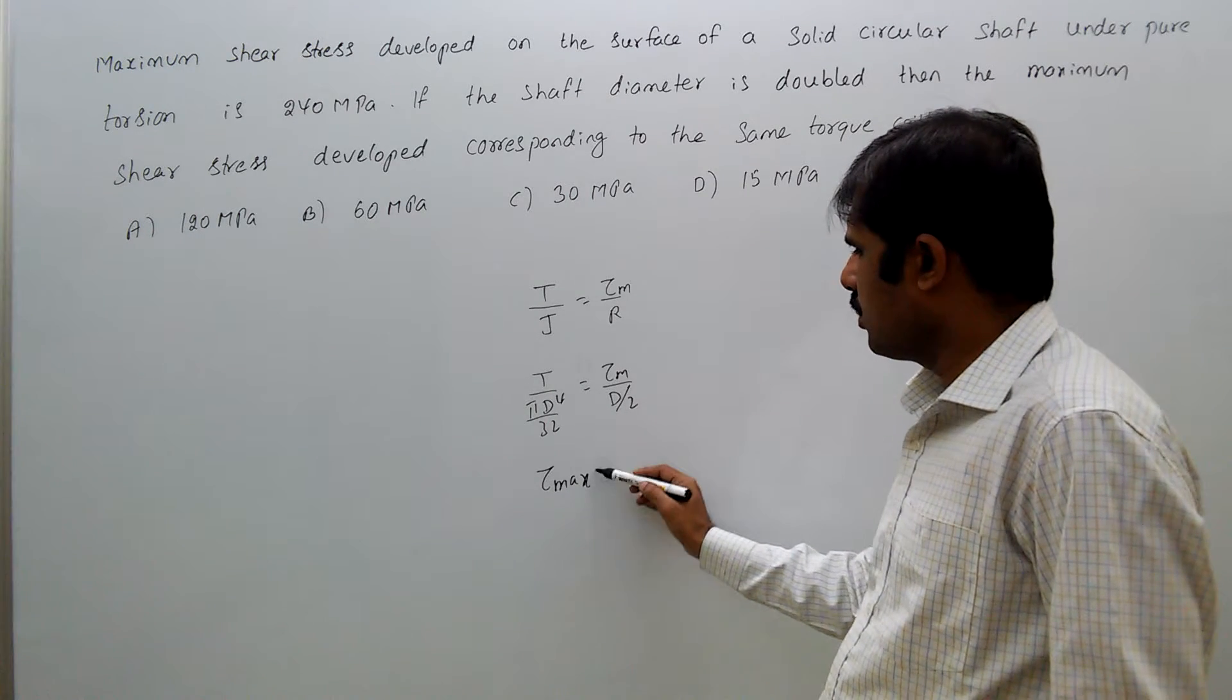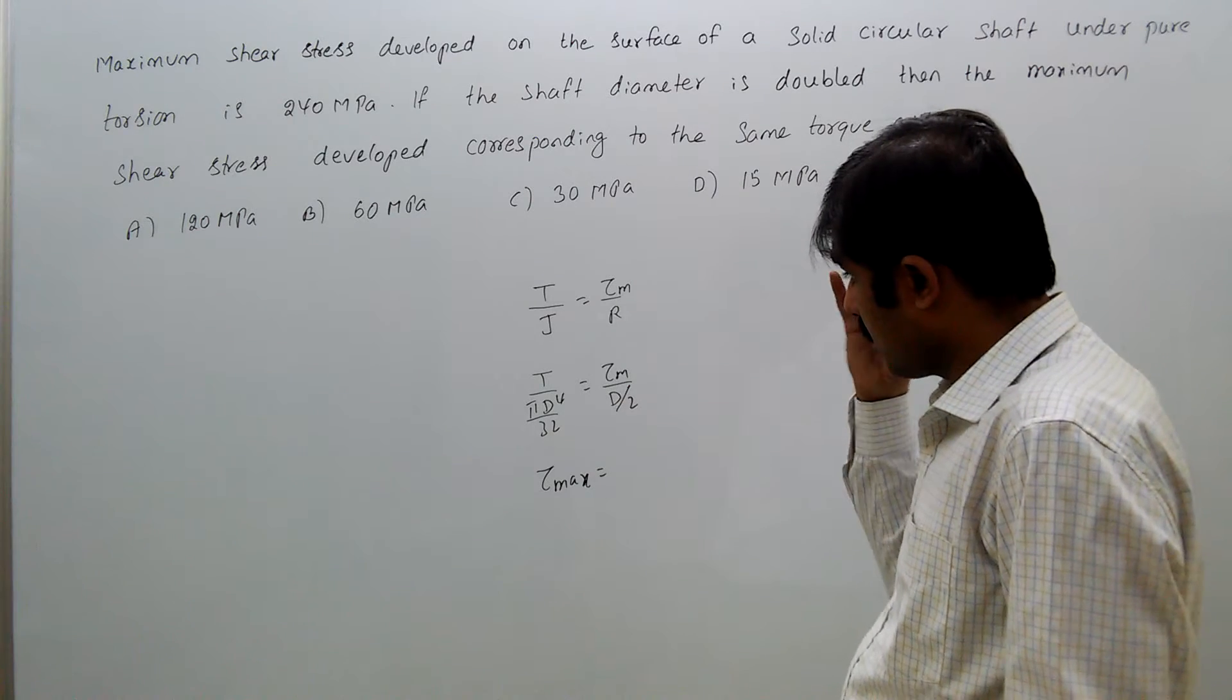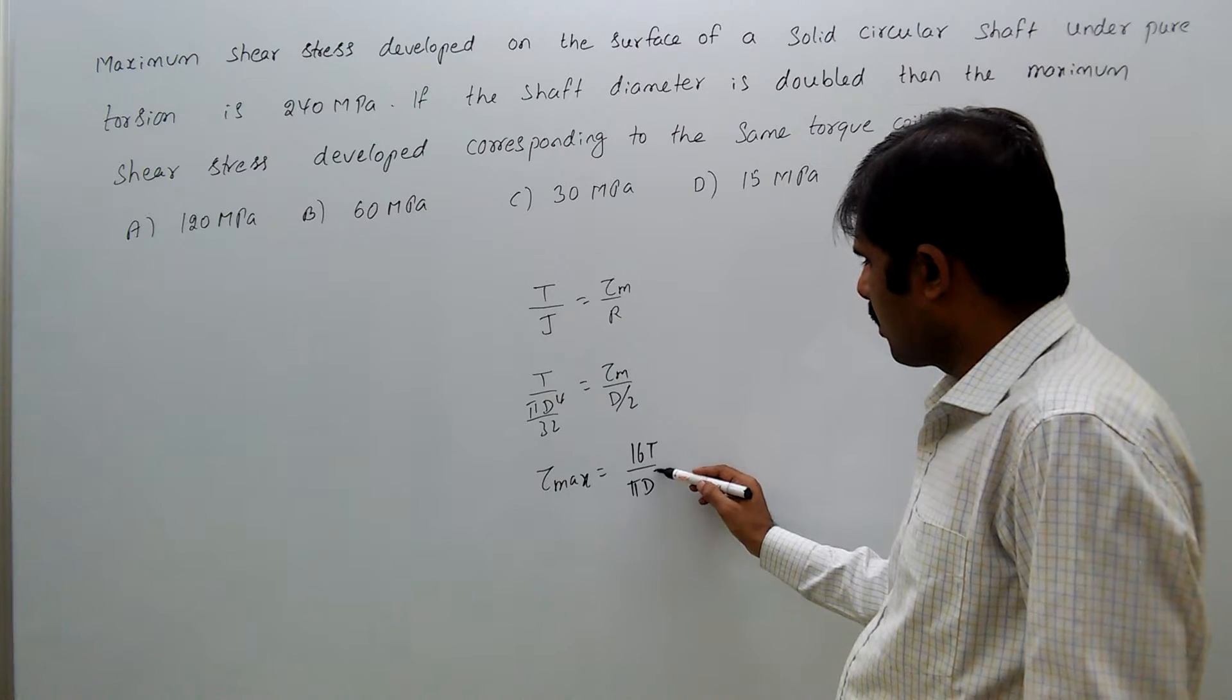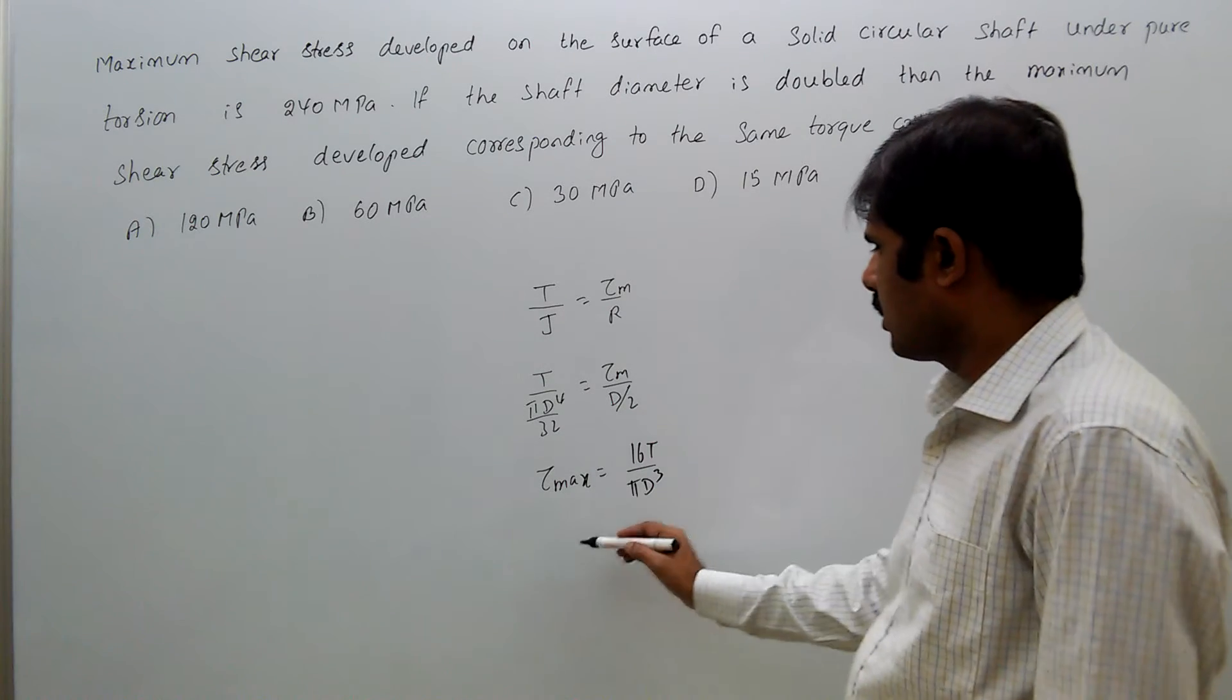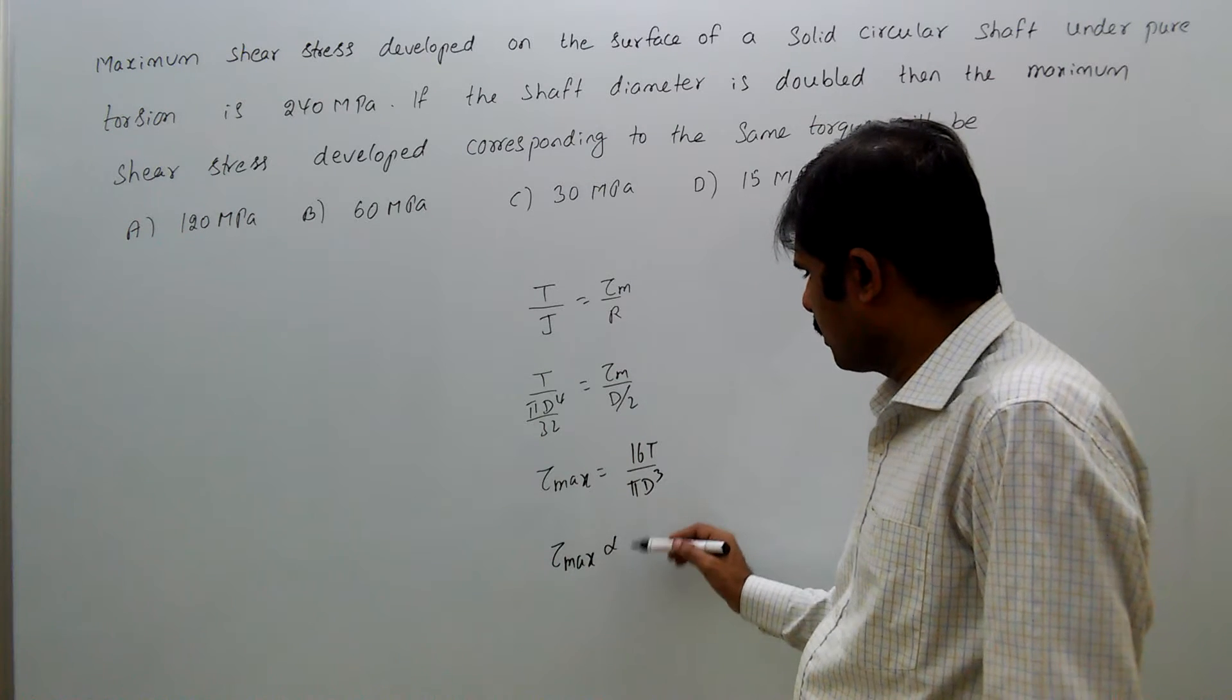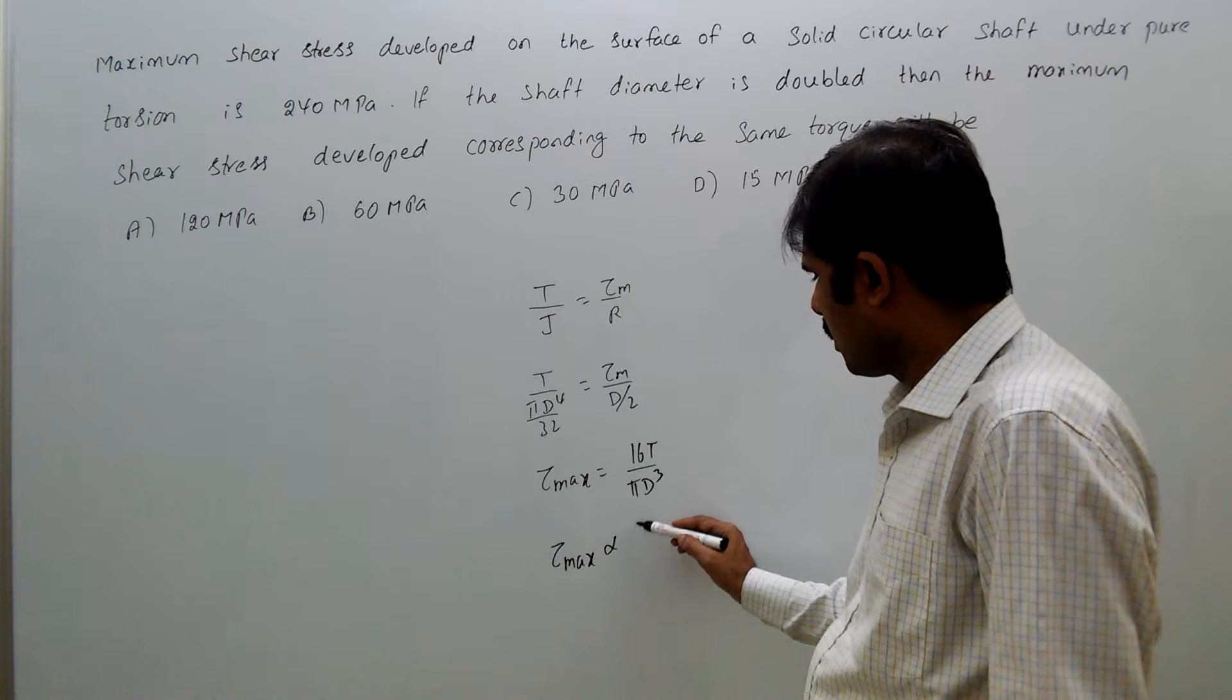Tau max equal to 16 t by pi d cube. That is, tau max is proportional to 1 by d cube.